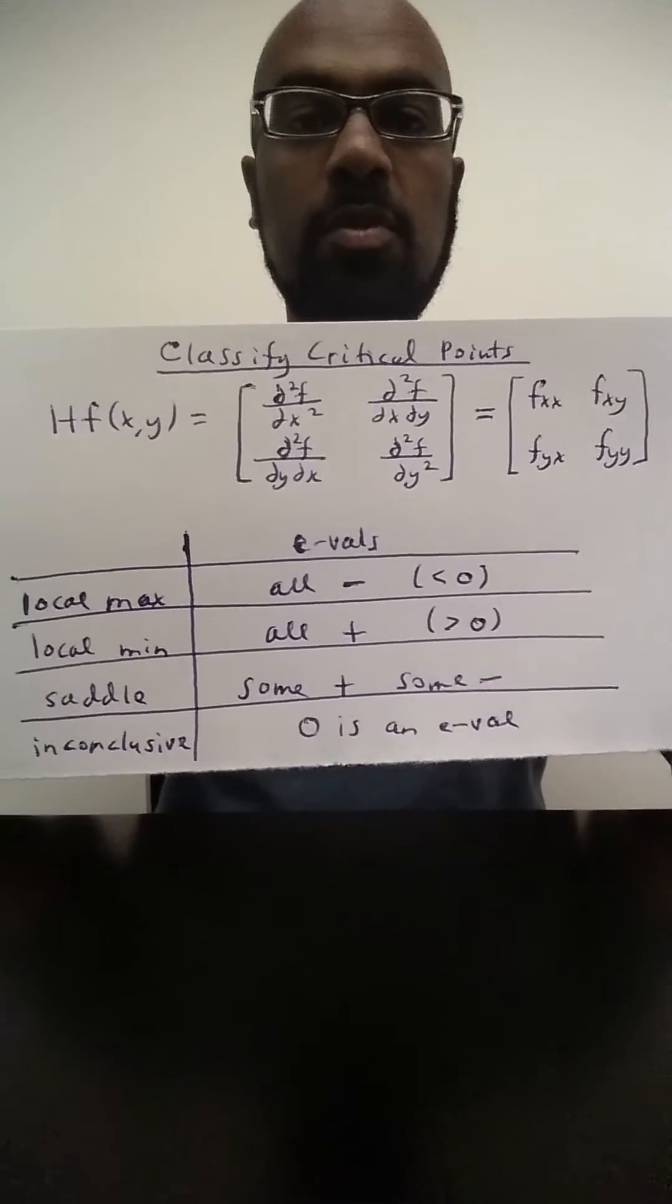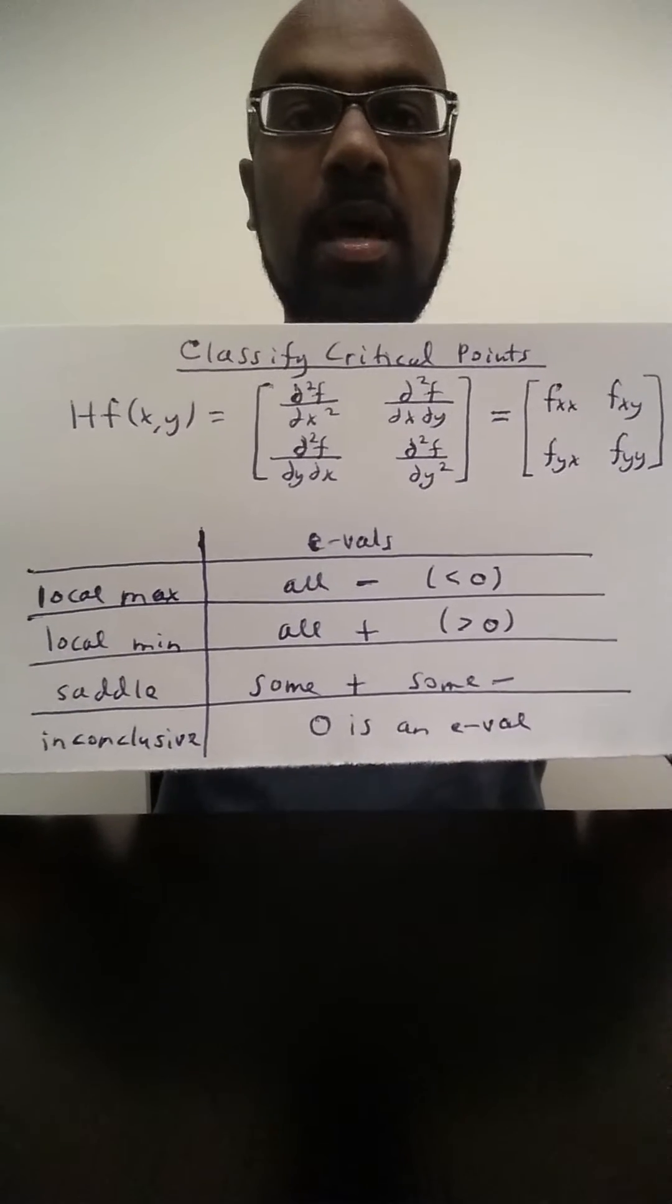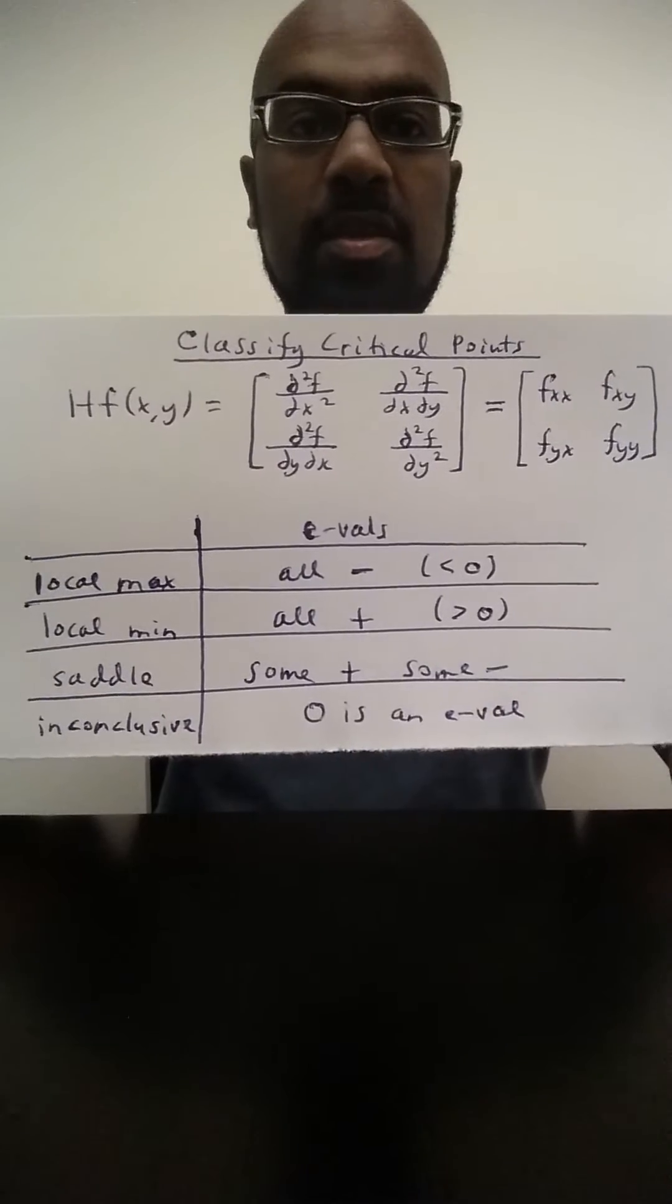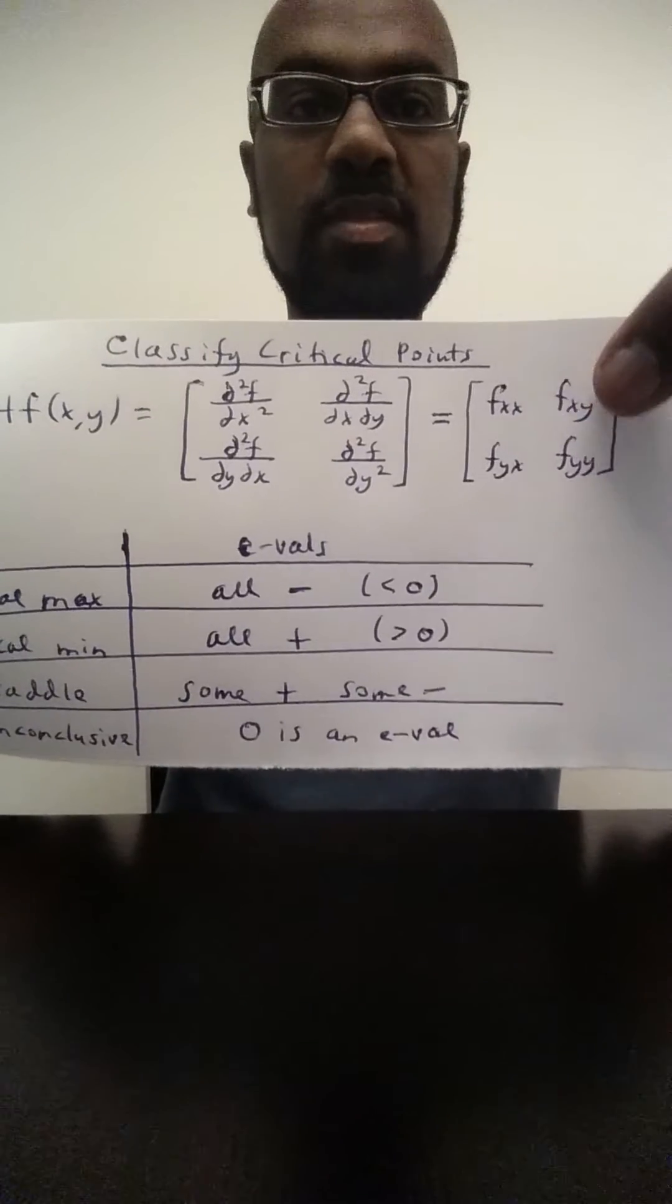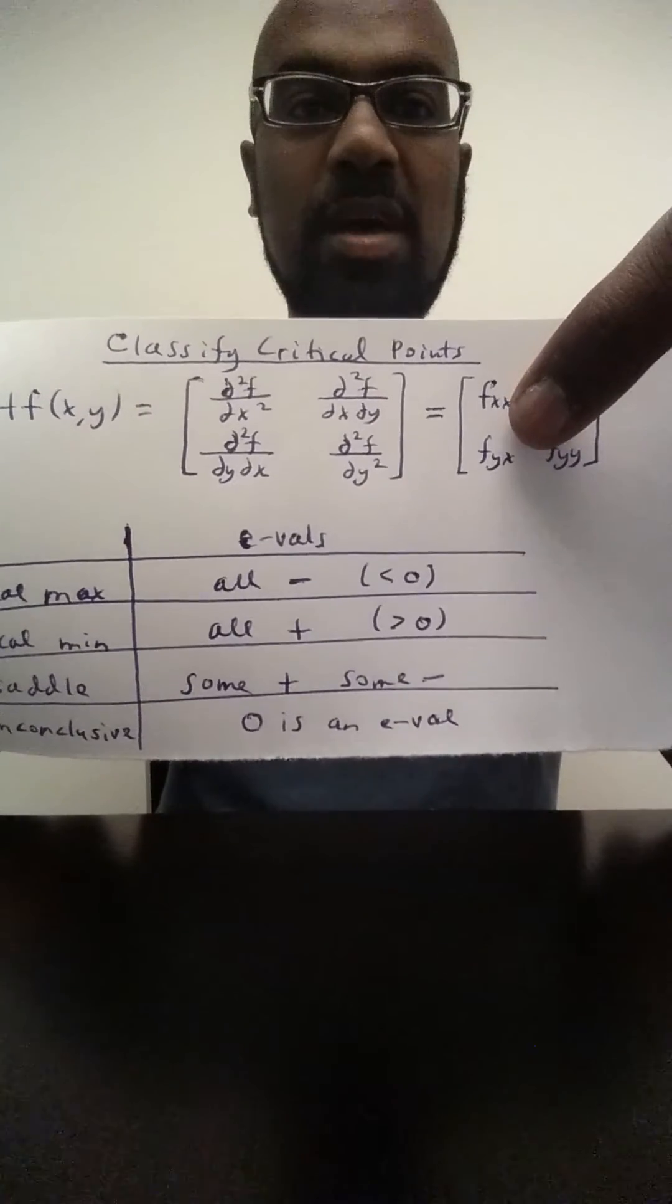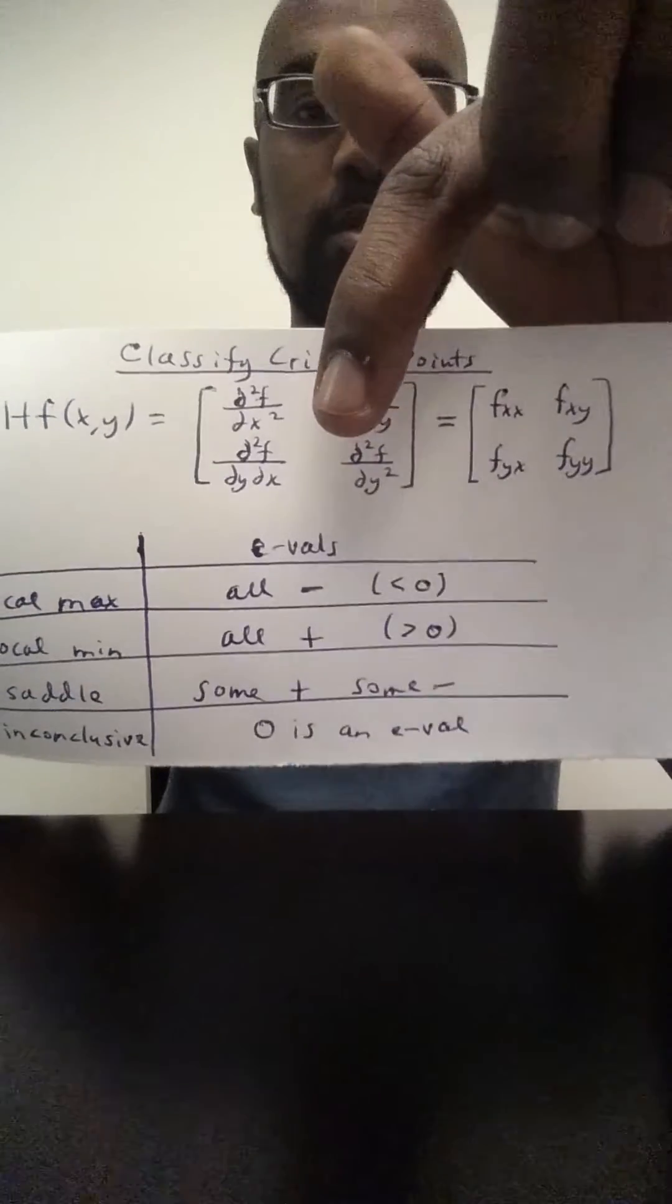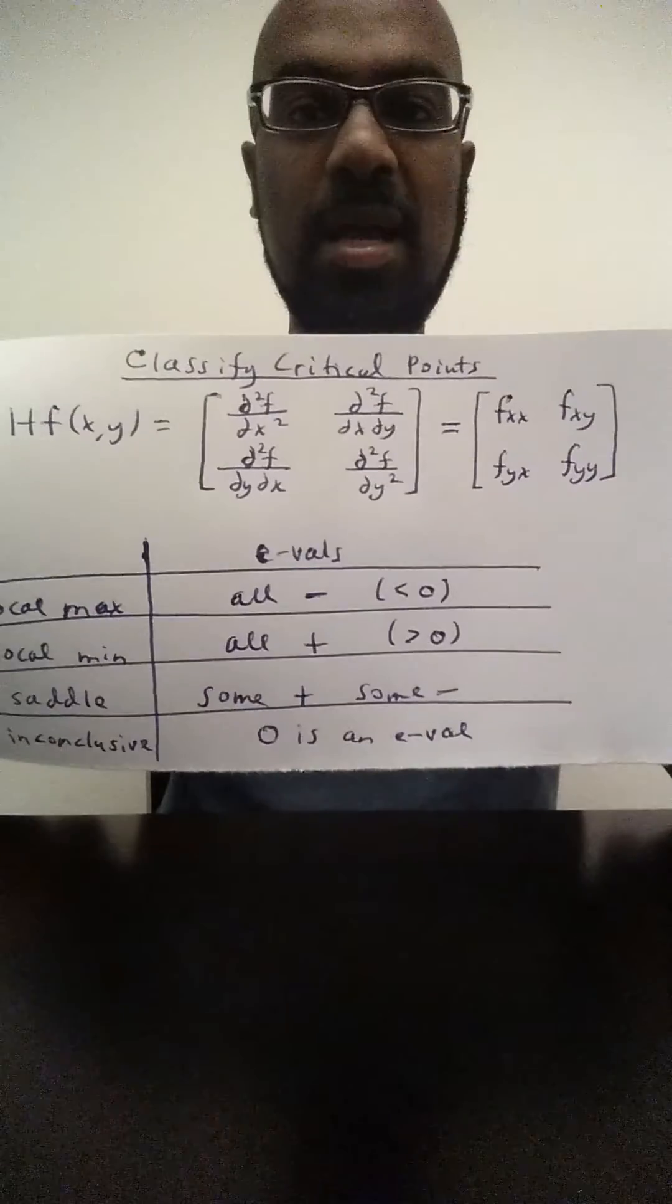So this brings you to a classification of the critical points that exploits eigenvalues. So to classify critical points you need to compute the Hessian of your given function, and that's the matrix of second partials. I've written that down here, and typically in multivariable courses you see this in terms of these f's with subscripts. So fxx is used to denote the second partial of f, particularly that with respect to x and x again.